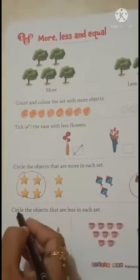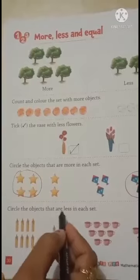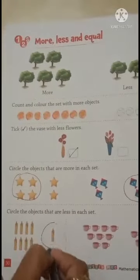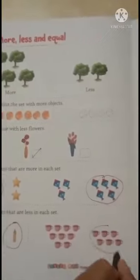Children, next question. Circle the objects that are less in each set. Less means come. See children, this is less.